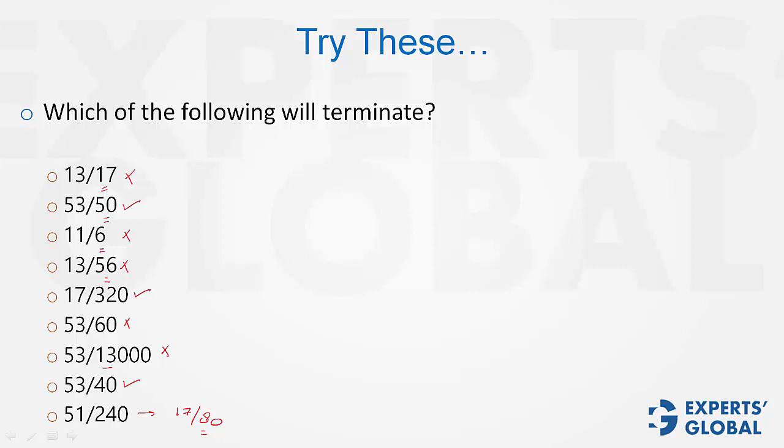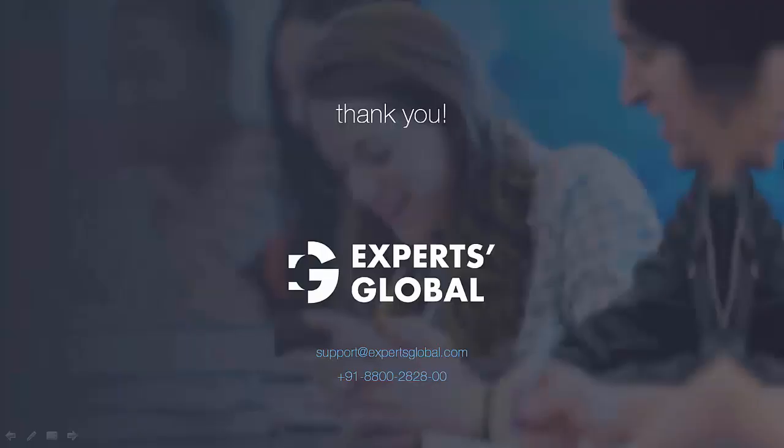So, 51 upon 240 is going to terminate. This was the concept, guys. GMAT shots are deliberately kept brief. For an elaborate explanation, please refer the stage 1 videos.